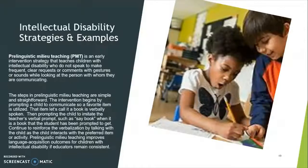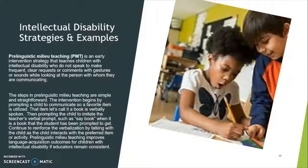Intellectual disability strategies and examples. Prelinguistic Milieu Teaching, called PMT, is an early intervention strategy that helps teach children with intellectual disabilities who do not speak and do not understand how to make clear gestures and comments to get attention. The steps involve using an item the student is already interested in — for example, a book a child loves — and saying, 'This is your book. Can you say book?' We need to repeatedly verbalize and talk to these children, and then eventually, with consistent persistence, they will say 'book.'